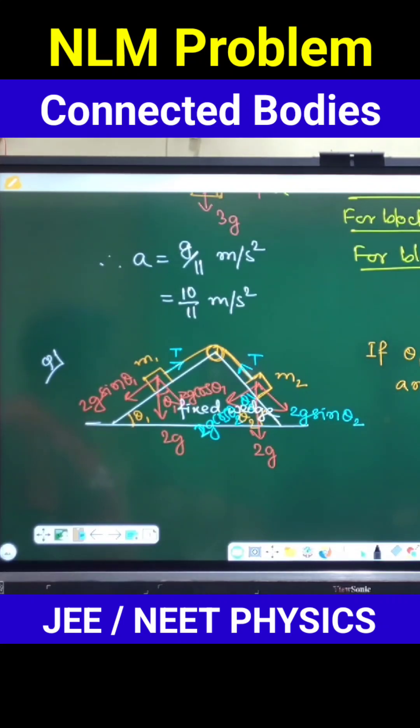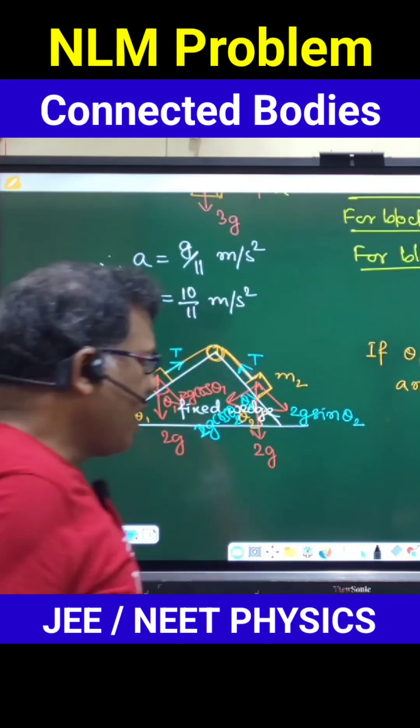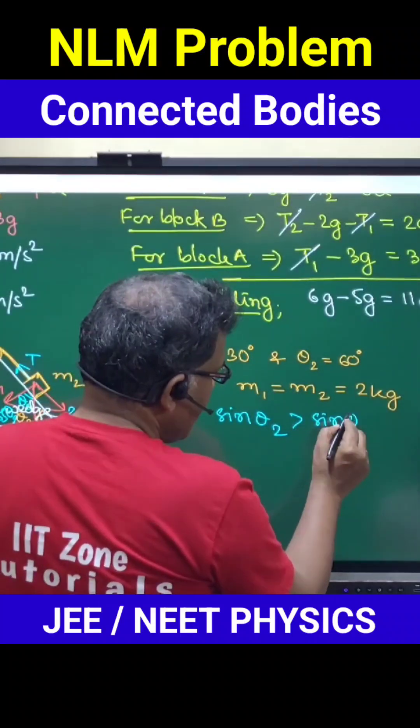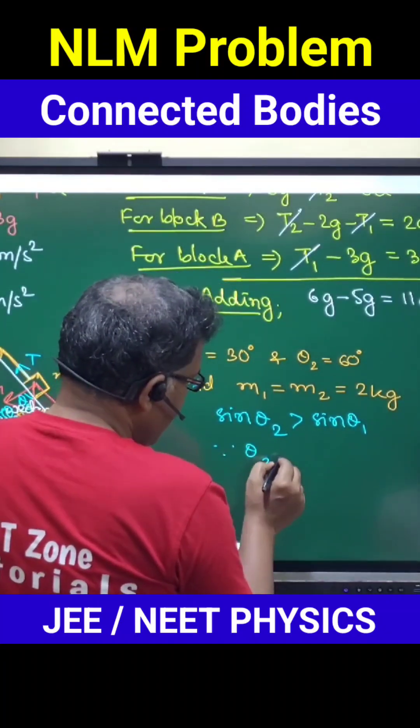The angle of elevation theta 2 for the other inclined plane, from data it is clear that theta 2 is 60 degrees, more than theta 1. So quite obvious that sin theta 2 will be greater in value than sin theta 1, since theta 2 is greater than theta 1.